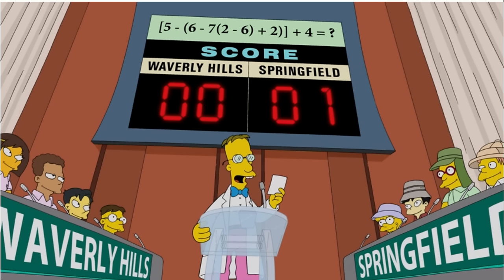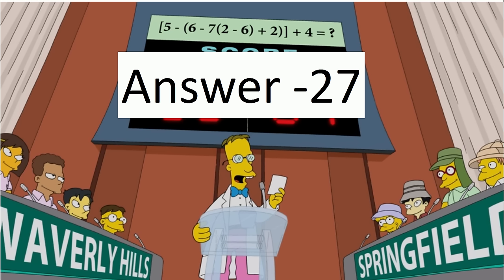The math competition features a bunch of different questions. This question tests whether you know the order of operations. The correct answer of negative 27 is shown in the episode.